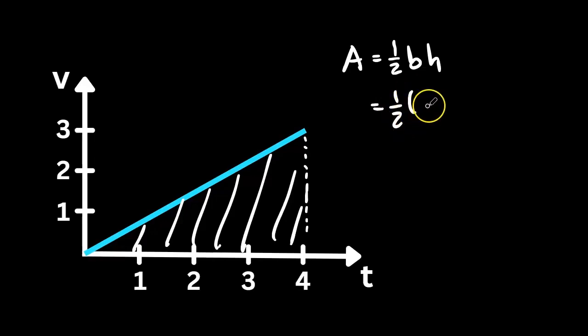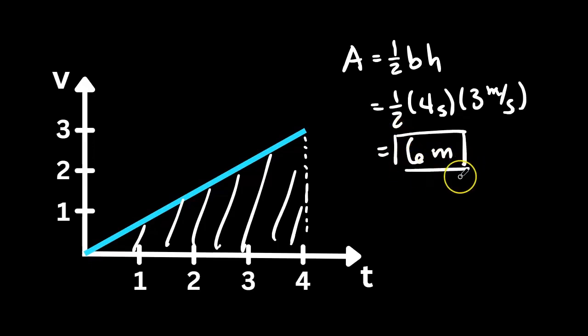The base here is 4 seconds, and the height is 3 meters per second. So 1 half times 4 is 2, 2 times 3 is 6. So we have 6, and notice the seconds canceled out. That leaves us with meters, and so the area is 6 meters.